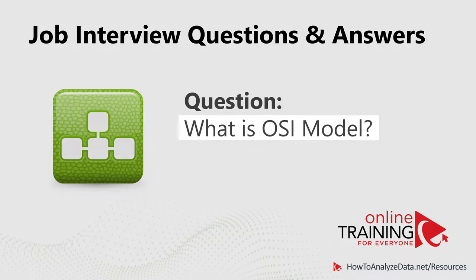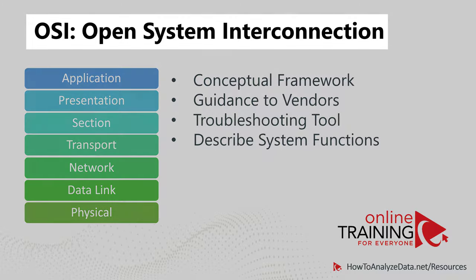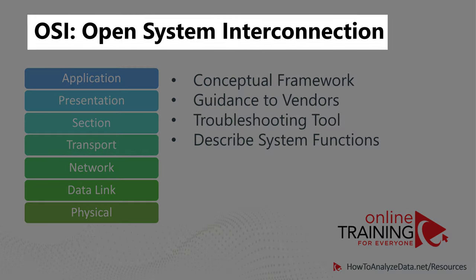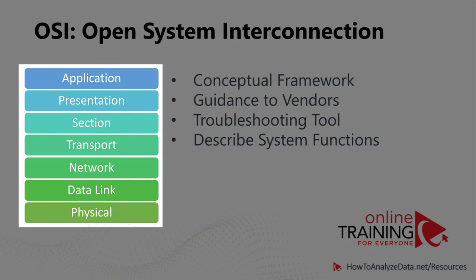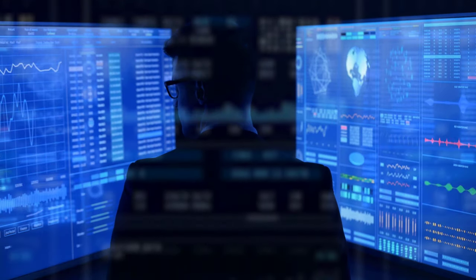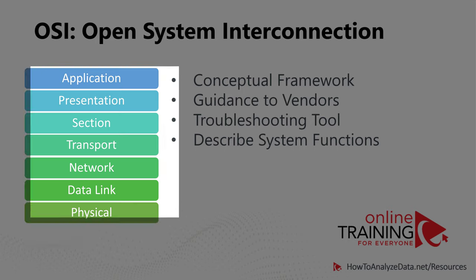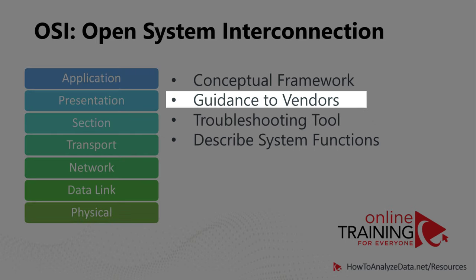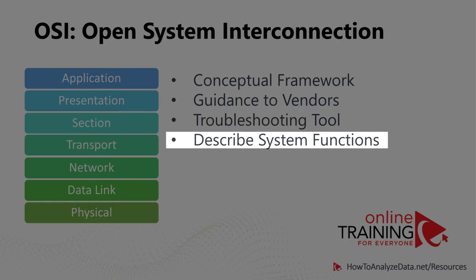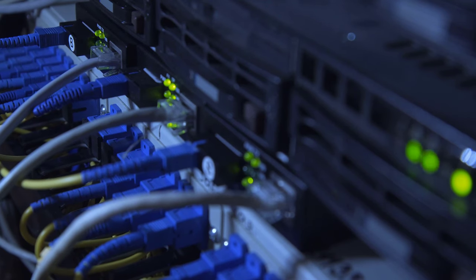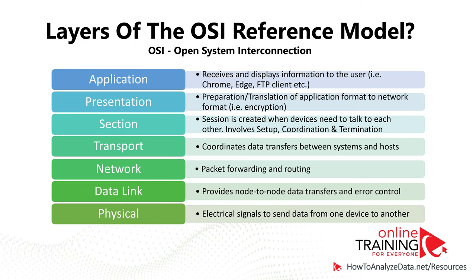A lot of times you might be asked, what is the OSI model? OSI stands for Open System Interconnection Framework. Keep in mind that this is only a conceptual framework which describes the functions of networking and telecommunication systems. It contains seven main layers: application, presentation, session, transport, network, data link, and physical. The OSI model was built as a recommendation on how a system should communicate over a network to guide vendors and developers. It is also used as a tool to help troubleshoot network problems and to describe functions of networking and telecommunication systems. Each layer in the model has its own specific function.